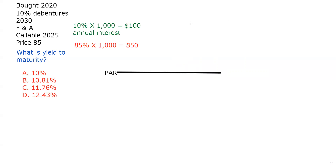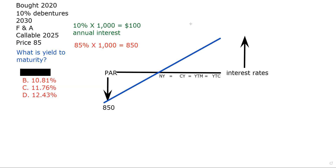We said it's priced at 85 — that's a discount; 85% of par is $850. We drew a flat line representing the bond at par, and we know interest rates have gone up causing the bond to trade at $850. When you buy a bond at par, that's the flat line on the teeter-totter, so we eliminate choice A. We then drew the line representing a bond at a discount: current yield is higher than the nominal yield, yield to maturity is higher than the current yield, and yield to call is higher than the yield to maturity.